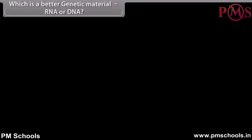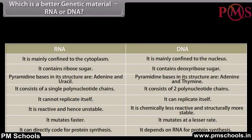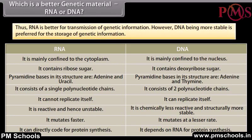Which is a better genetic material — RNA or DNA? RNA is better for transmission of genetic information. However, DNA, being more stable, is preferred for the storage of genetic information.